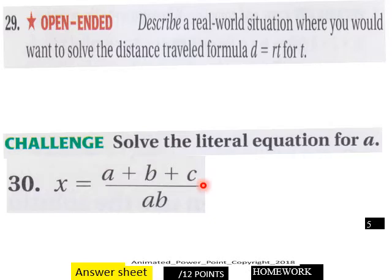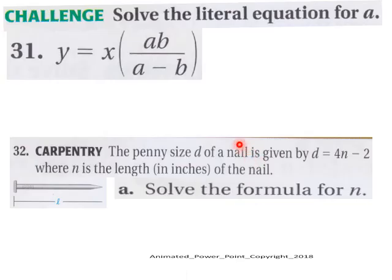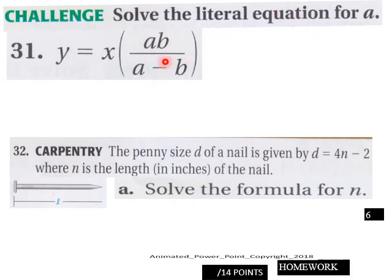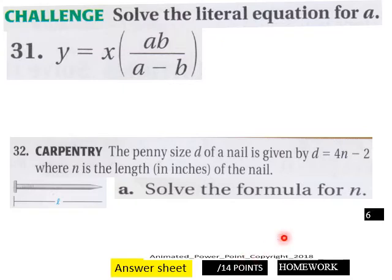Page five, open-ended, and then you got a challenge question, solve the literal equation for a. And let's see, you got 12 points here for page five. And then page six, solve it for a again here. Carpentry, solve the formula for n, 14 points page six.